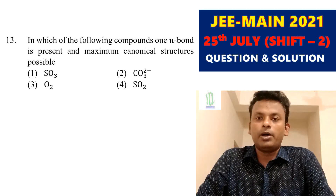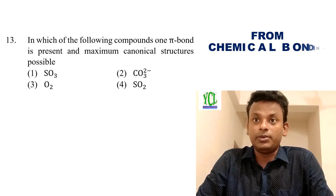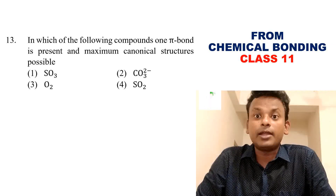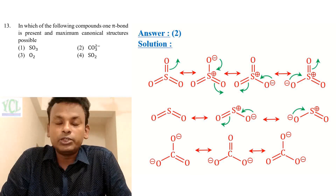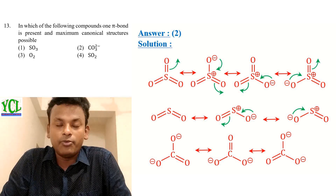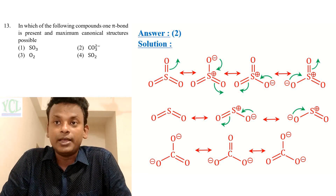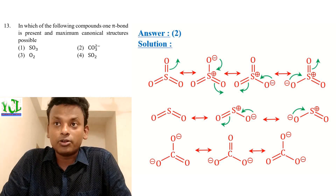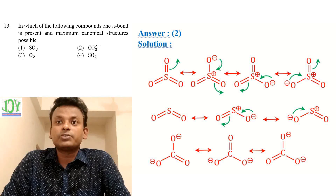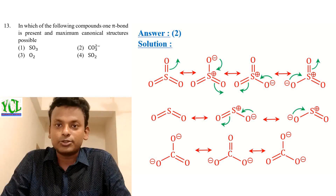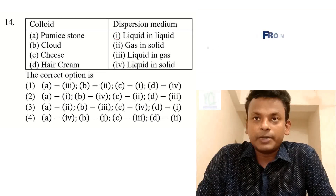Question 13: In which of the following compounds is one pi bond present and the maximum number of canonical structures possible? The answer is option 2 — CO3²⁻. CO3²⁻ has one pi bond and the maximum number of canonical structures is three. The other options do not satisfy both conditions. So option 2 is correct.